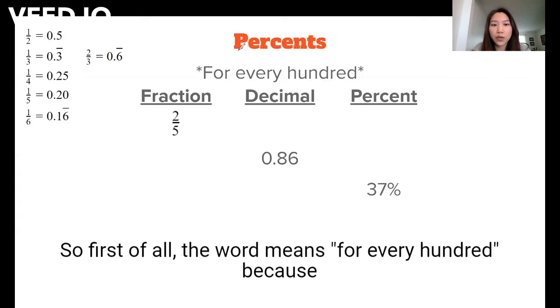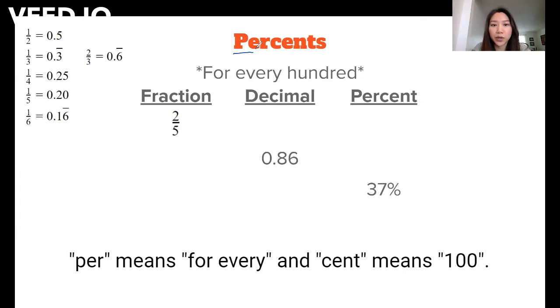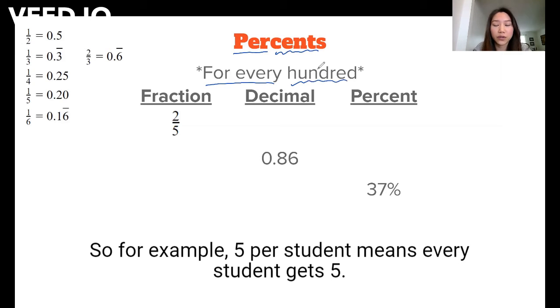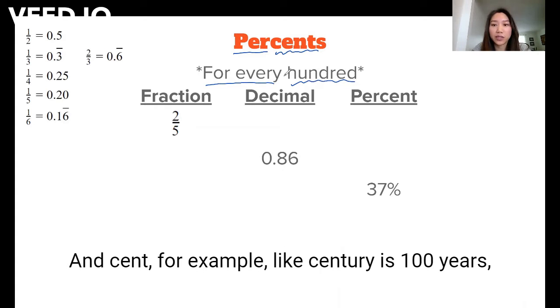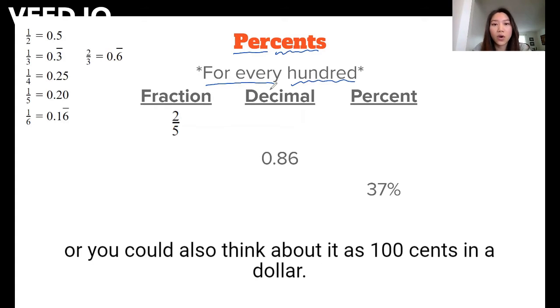Let's talk about percent. First of all, the word means for every hundred because 'per' means for every and 'cent' means hundred. For example, five per student means every student gets five. And cent, for example, like century is a hundred years, or you could also think about it as a hundred cents in a dollar.